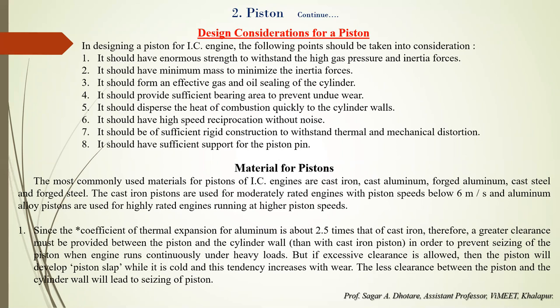The commonly used materials for IC engine pistons are cast iron, alloy cast iron, aluminum alloys, alloy cast steels, and forged steels. The advantages of alloy cast iron include good strength and good wear resistance at high temperatures, and a low coefficient of thermal expansion. The disadvantage of cast iron is its high weight and low thermal conductivity; it is used in moderate power engines with piston speed below 6 meters per second.